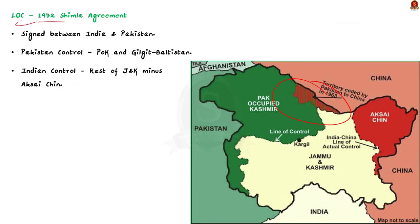There was no Line of Control before the 1972 Shimla Agreement. This agreement also practically junked the UN resolution, as the two countries agreed to resolve all disputes through bilateral talks. The Line of Control thus drawn gave Pakistan control over Pakistan-Occupied Kashmir and Gilgit-Baltistan, while the rest of Jammu and Kashmir minus Aksai Chin is situated on the Indian side.